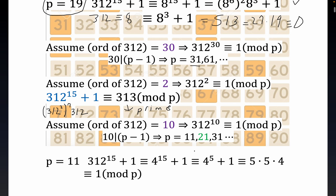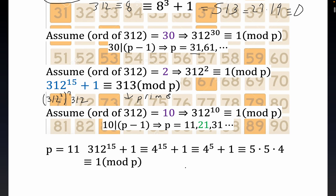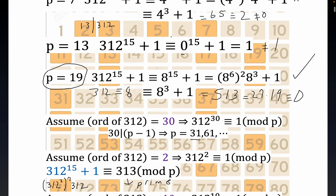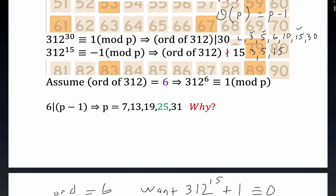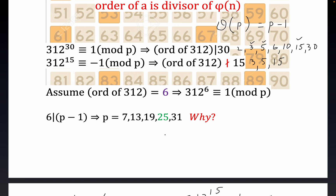We still need to check order = 10, and the associated prime p = 11. Note that 21 is not prime so it's excluded. For p = 11, the computation gives us a result congruent to 1, not zero, so we can rule out 11. Five was also taken care of in this process. We've now gone through all possible orders: 2, 6, 10, and 30.